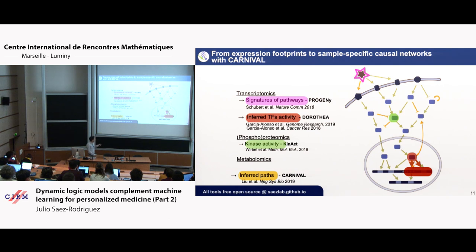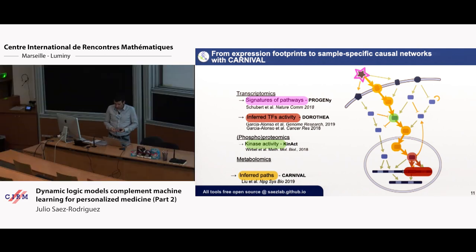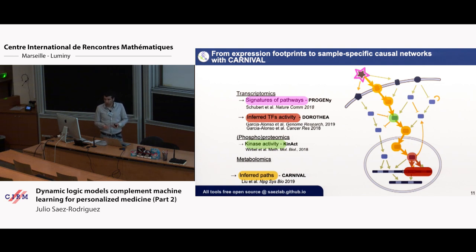Another example I want to show is from inferred paths from CARNIVAL. In CARNIVAL what you try to do is to connect stimulations from pathways to transcription factors by finding which causal links are likely to connect them. If your method is right, you should find an association with the activity of these proteins, if you could measure it. We also show that for some of these proteins, there is phosphorylation data, and we could see that in general the activity of the nodes — estimated only from expression — correlates well with the phosphorylation of the nodes.